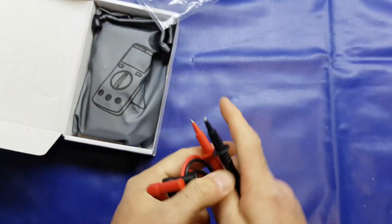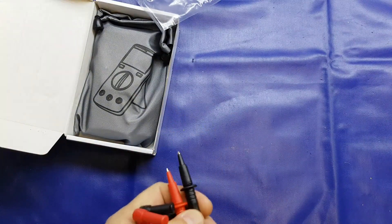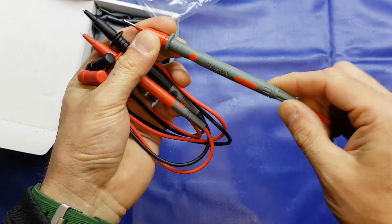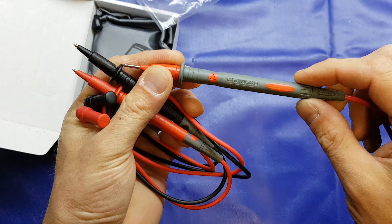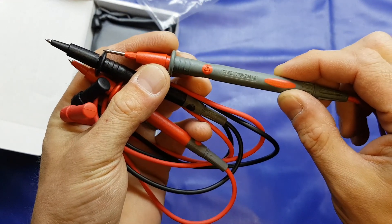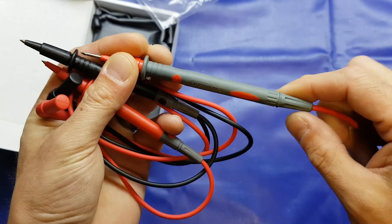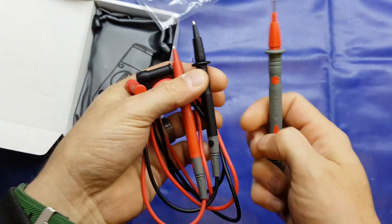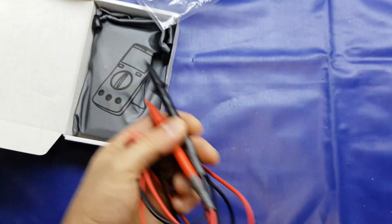But yeah, not too bad leads, compared to the ones that come with the 97, these look a bit more professional if you want to call it that. These are rated apparently cat 3, 1000 volts at 20 amp, again you're probably not going to trust them but yeah, not too bad, it is a cheap multimeter after all.